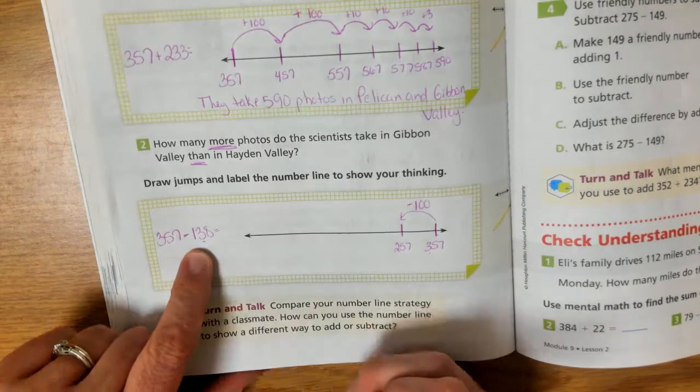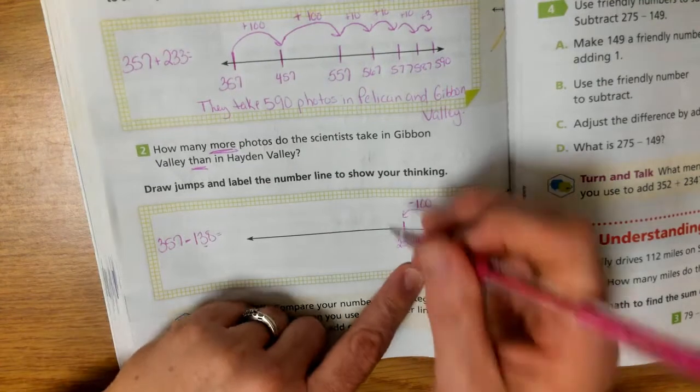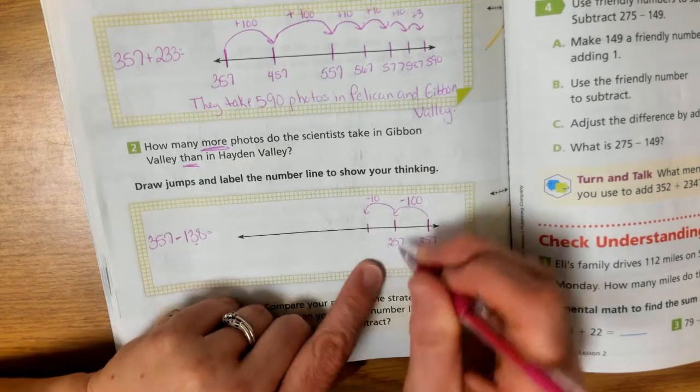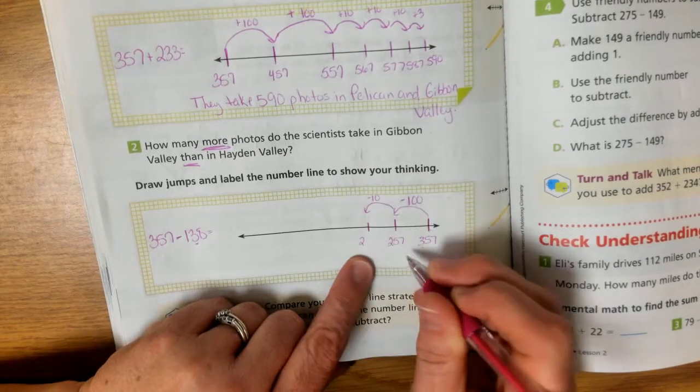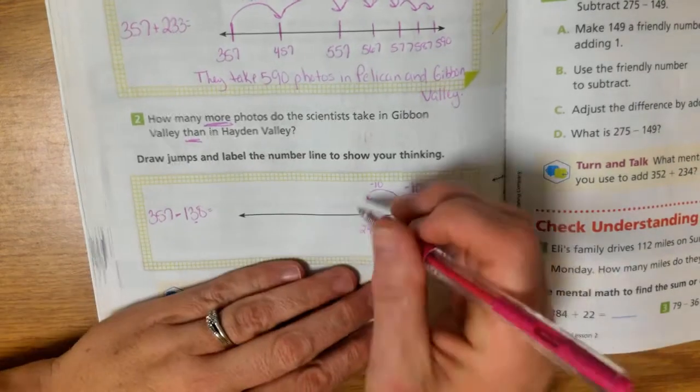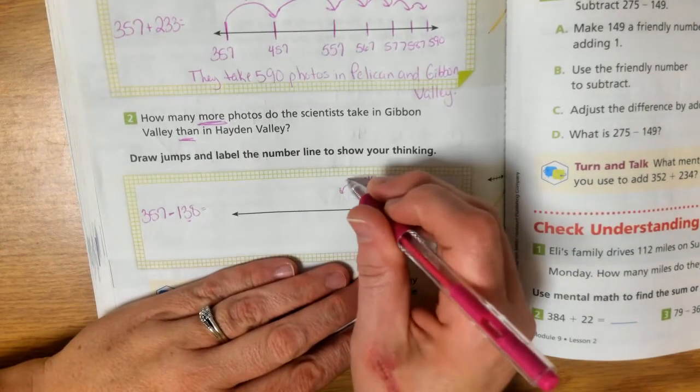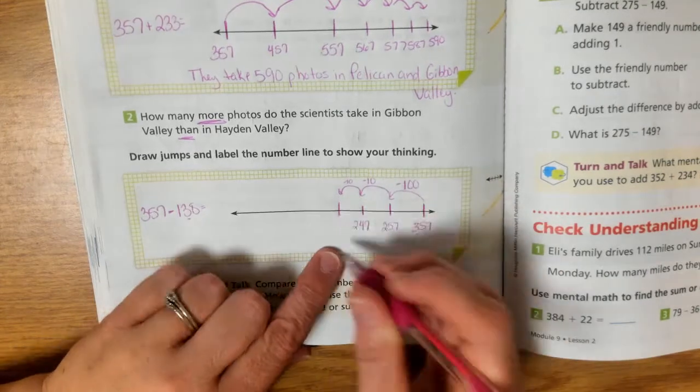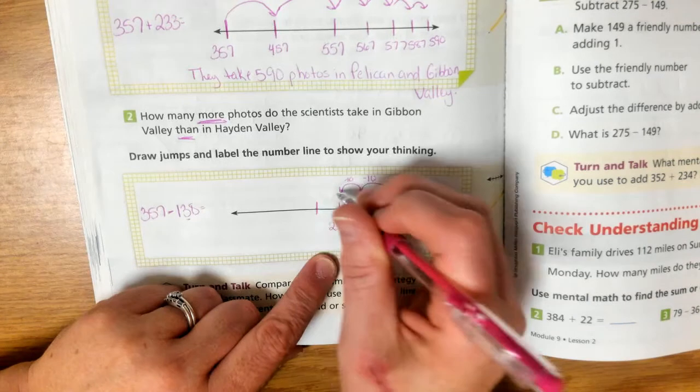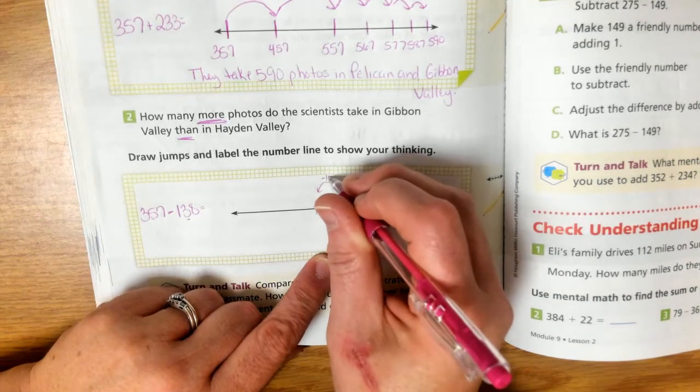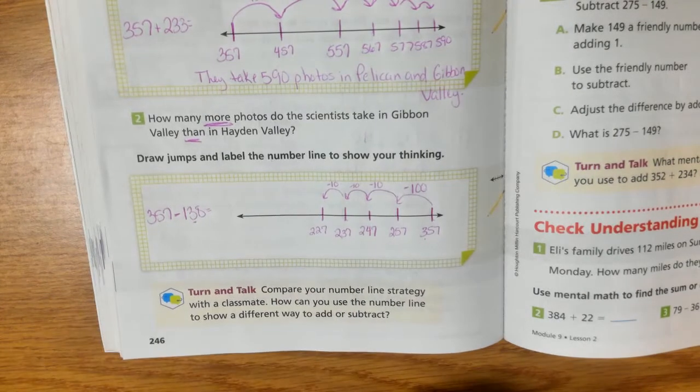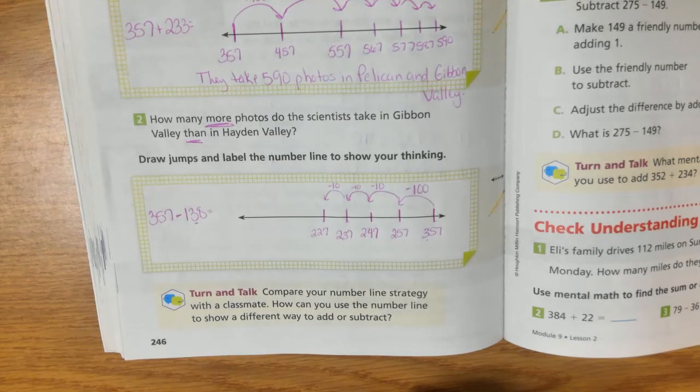Now in my tens place, I have 3 tens. So I'm going to go down one 10. So I'm going to take one 10 away. So my 5 now becomes a 4. 247. Another 10. So my 4 now becomes a 3. And another 10. So my 3 now becomes a 2. So now I've gone down my tens.